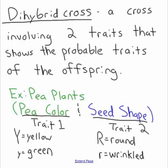What that essentially means is this whole entire time we've been doing Punnett squares that are monohybrid — so one trait. We've been looking at color, yellow versus green, and doing a cross between two pairs. Now we are going to be doing a cross between two traits.